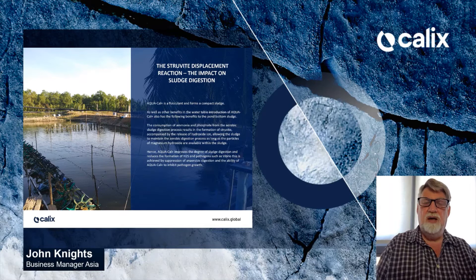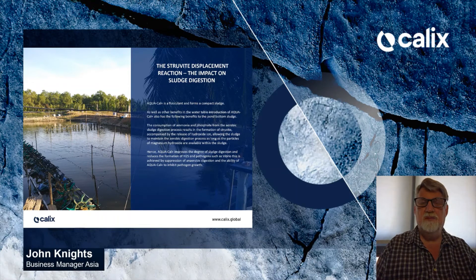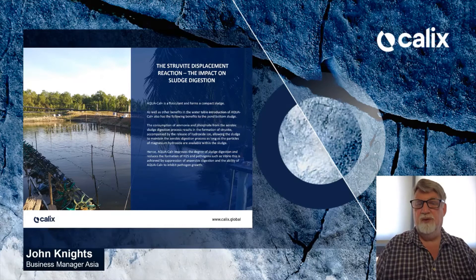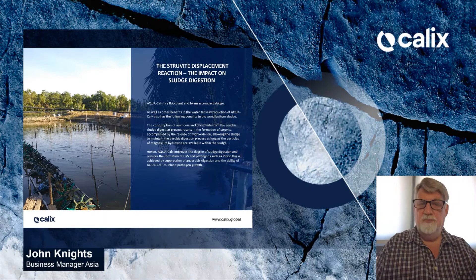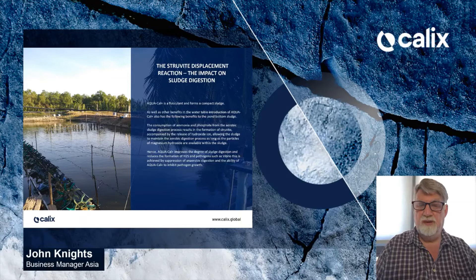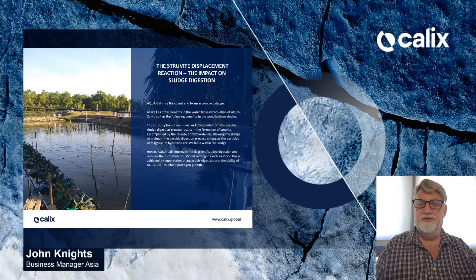So we're going to look at what AquaCal can do. We call this the struvite displacement reaction and its impact on sludge digestion. AquaCal is a flocculant that forms a compact sludge, as well as having other benefits in the water. The introduction of AquaCal Plus also has the following benefits to pond bottom sludge: the consumption of ammonia and phosphate from the aerobic sludge digestion process results in the formation of struvite, accompanied by the release of hydroxide ions, allowing the sludge to maintain the anaerobic digestion process as long as the particles of magnesium hydroxide, or AquaCal Plus, are available within the sludge. Hence AquaCal Plus improves the degree of sludge digestion and reduces the formation of hydrogen sulfide and pathogens such as Vibrio, achieved by suppression of anaerobic digestion and the ability of AquaCal to inhibit pathogen growth.